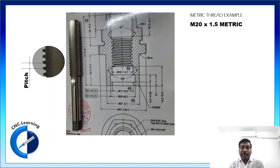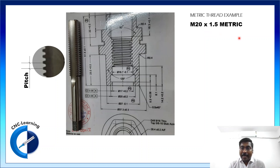When we talk about thread, let us understand how a metric thread is designated and how it is done for inch. This is a metric thread example: M20 × 1.5 pitch metric. M20 means 20 is the nominal size for the thread — it can be external thread or internal thread. And 1.5 is the pitch.